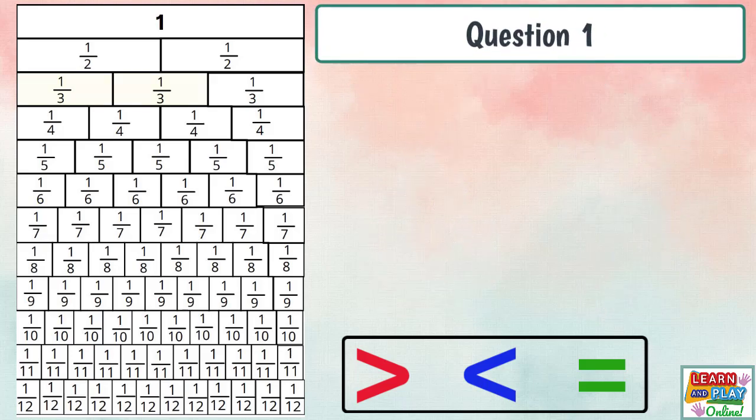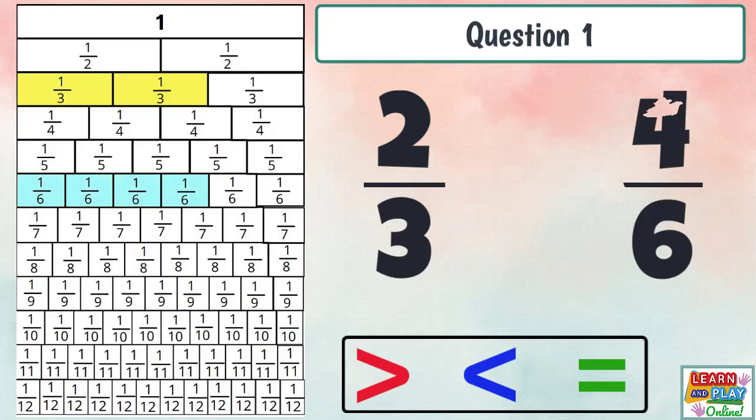Question one. Compare two thirds and four sixths. Two thirds is equal to four sixths.